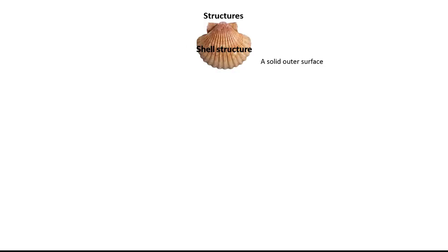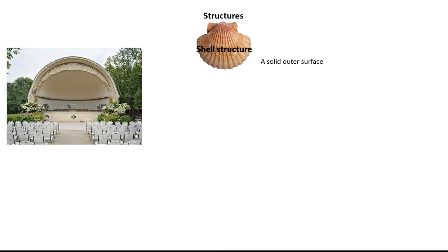A shell structure is defined by being an outer surface that may be rounded or flat, surrounding an inner area. Its shape spreads the force of the load throughout the whole structure, so that every part supports only a small part of the load — and this is what gives it its strength.